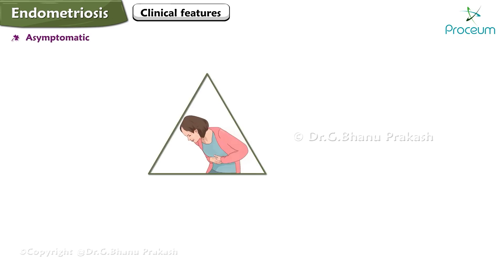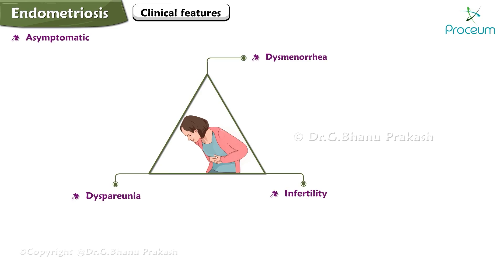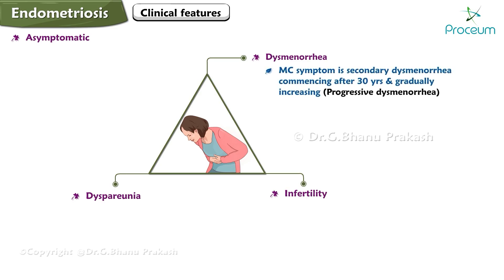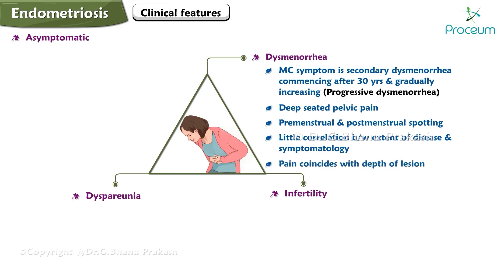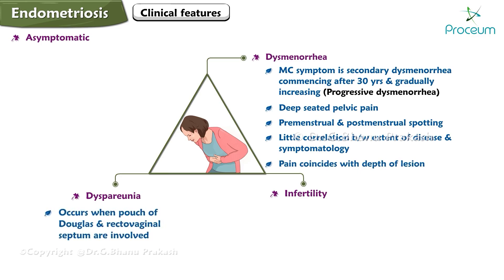Clinical features: patients may be asymptomatic. The classic triad of endometriosis is dysmenorrhea, dyspareunia, and infertility. Dysmenorrhea is the most common symptom — it is secondary dysmenorrhea commencing after 30 years and gradually increasing. Other symptoms include deep-seated pelvic pain and premenstrual and postmenstrual spotting. There is little correlation between the extent of disease and symptomatology.